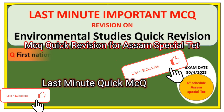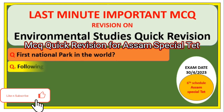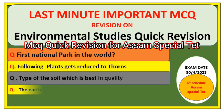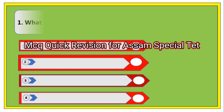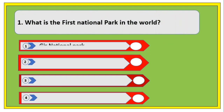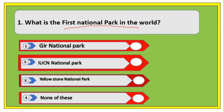Last-minute quick MCQ revisions on environmental science. We'll start with the first question — all the best for tomorrow. What is the first national park in the world? The options are Gir National Park, IUCN National Park, Yellowstone National Park, and none of these. The right answer is Yellowstone National Park.